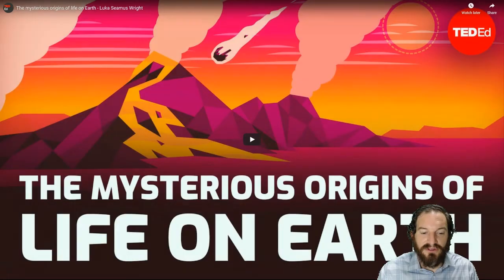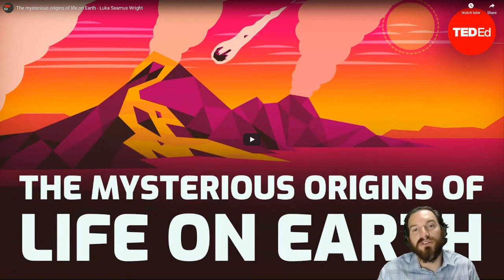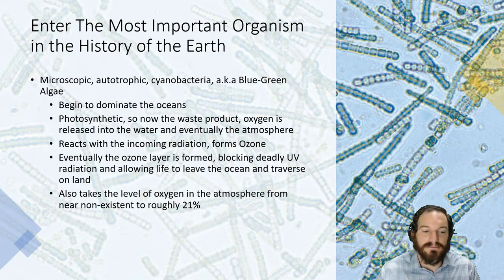There's a TED talk I'll have you watch on your own — do a quick search for 'The Mysterious Origins of Life on Earth.' It talks about black smokers, primordial soup, and how we get the first cells on the planet. It's a short five-minute video I highly recommend.